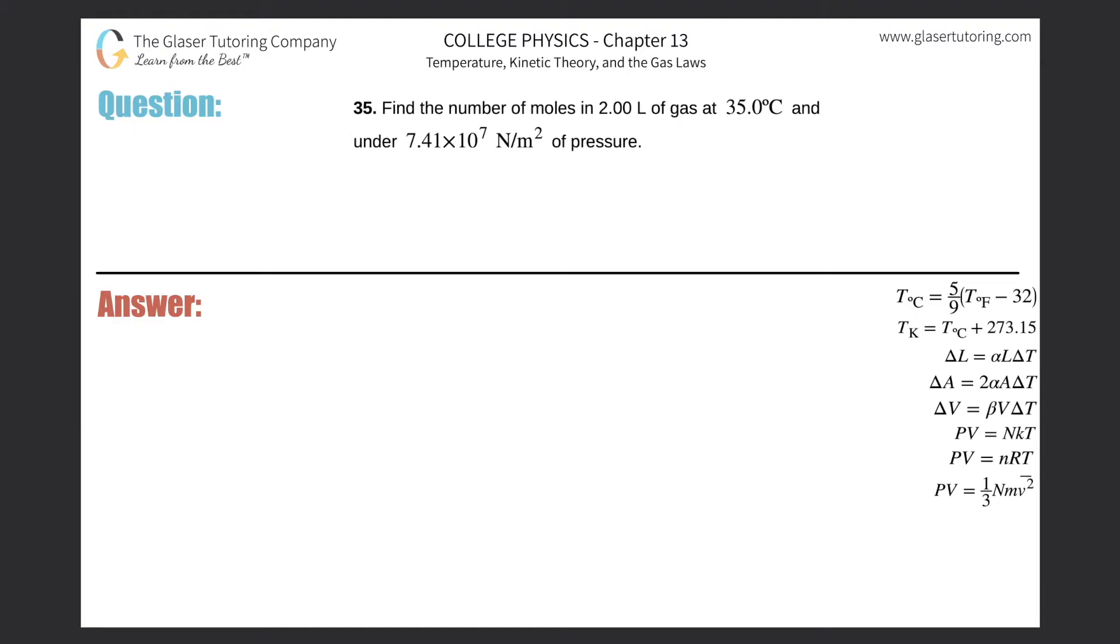Number 35: Find the number of moles in 2 liters of gas at 35°C and under 7.41×10^7 N/m² of pressure. Basically, we're going to be using the ideal gas law here.